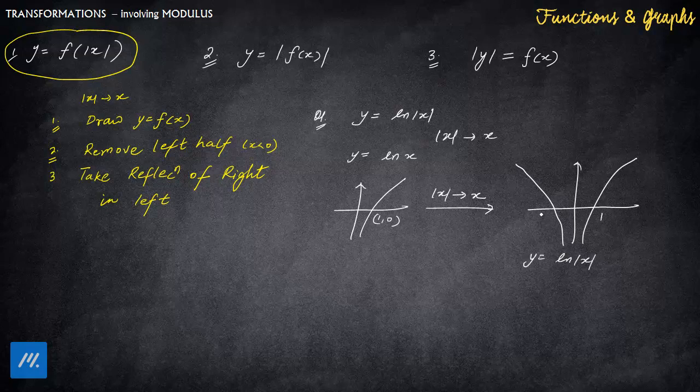So this is the final graph of y = ln|x|. If this was 1, then this will obviously be -1. Now if somebody asks you the domain, you can easily say x belongs to R minus {0}, because zero is not defined. This is the beauty of using graphs that you can easily answer various questions.